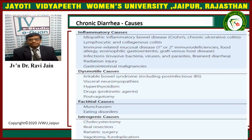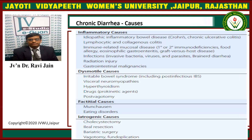Inflammatory causes include idiopathic inflammatory bowel disease — Crohn's disease and ulcerative colitis. There can be lymphocytic and collagenous colitis, immune-mediated mucosal disease, immune deficiencies, food allergies, eosinophilic gastroenteritis, and graft-versus-host disease. Infections include invasive bacteria, viruses, and parasites. Drug-induced diarrhea and radiation injury are possible, as are gastrointestinal malignancies. Dysmotility causes include irritable bowel syndrome including post-infectious IBS, visceral neuromyopathies, hyperthyroidism, prokinetic drugs, and post-vagotomy. Factitious causes include Munchausen syndrome and eating disorders. Bariatric surgery can also be responsible for diarrheal causes.